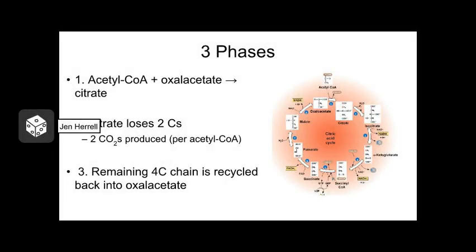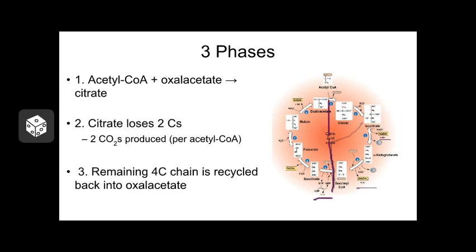The Krebs cycle can be broken down into three phases. First, acetyl-CoA joins with a molecule known as oxaloacetate, and a molecule known as citrate is formed. In the second phase, citrate is broken down through a series of steps and energy products are formed. In the third phase, the four-carbon intermediate is recycled back into oxaloacetate so it can start the cycle over again. Surprisingly, this recycling step also releases a couple of energy products.